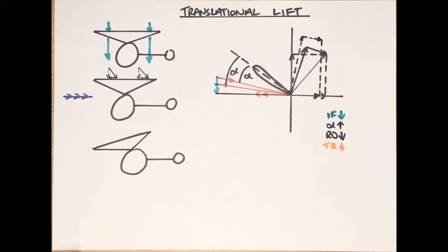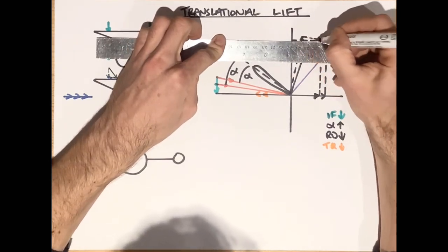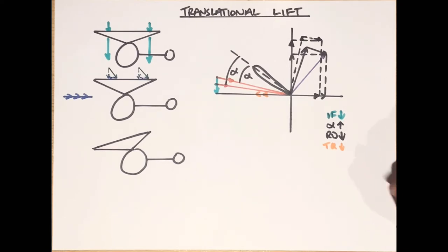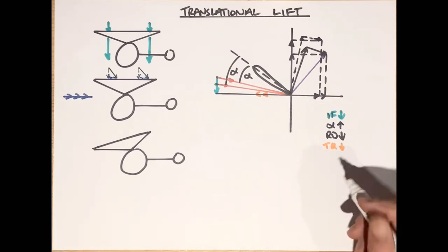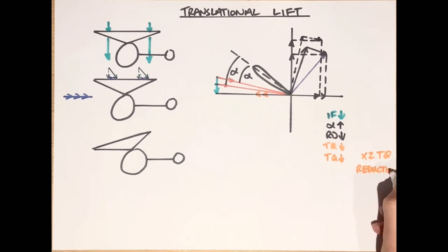At the same time, as we remember from ground effect, we also get a change in the vertical component. This change in the vertical component has given us an increase in total rotor thrust, which means if we do nothing else, the aircraft is going to start to accelerate upwards. As well as the reduced induced flow giving us increased angle of attack and reduced torque, we're also going up, therefore having to apply collective as the pilot. As soon as we apply collective, that has the secondary effect of reducing torque. So like ground effect, we're getting a times-two torque reduction.